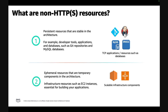The second type of resources are ephemeral resources, which are more temporary parts of your architecture such as EC2 instances, which scale up and down based on the compute demand. For example, if your application witnesses a surge in traffic, EC2 instances spin up to meet the heavy traffic requirements, and once the traffic subsides, the EC2 instances which are no longer needed terminate.